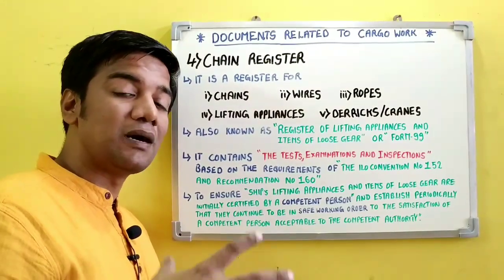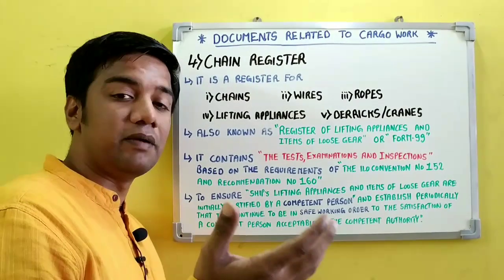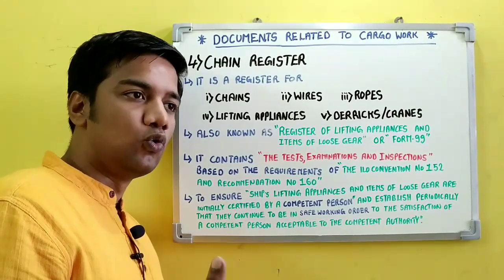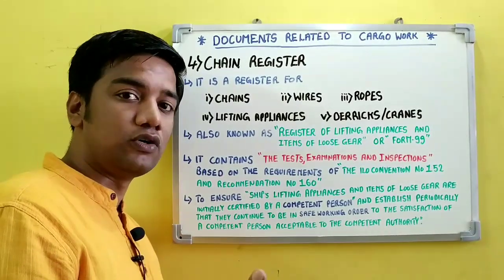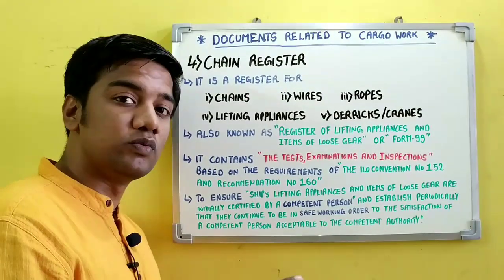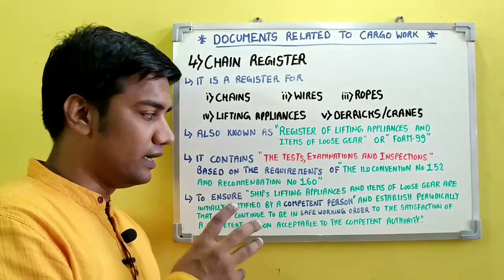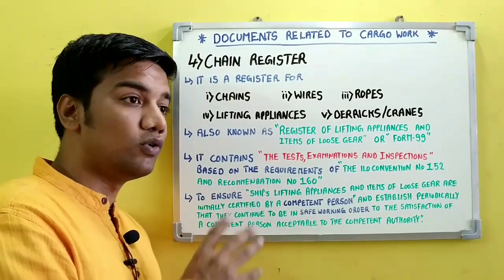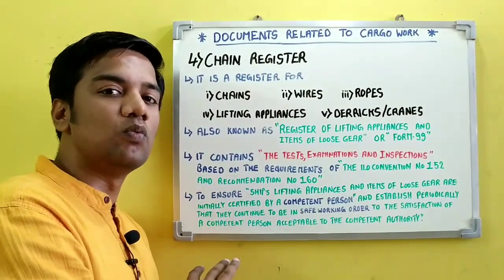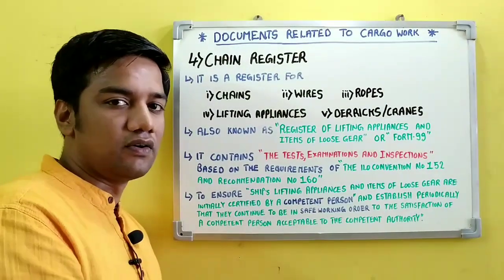Another important question: who is the competent authority? The competent authority may be a minister, a government department, or any other authority who has the power to bring in regulations or give instructions or orders which can be brought into force with the help of law. The competent person follows these regulations and orders from the competent authority and carries out the tests, examinations, and inspections accordingly.